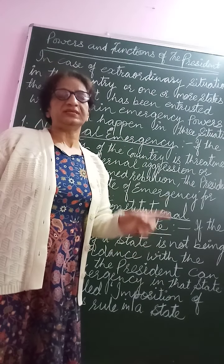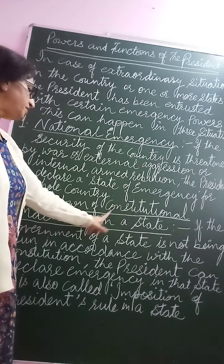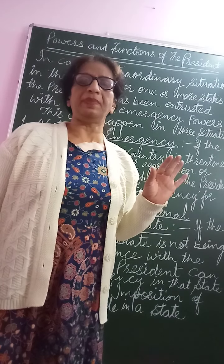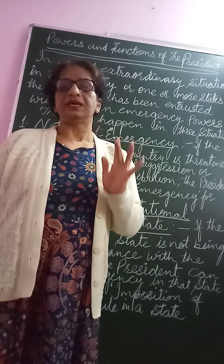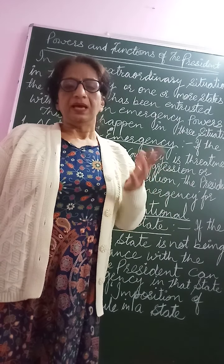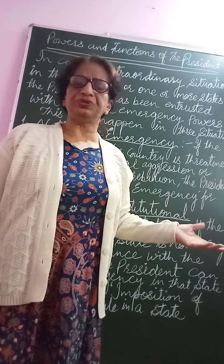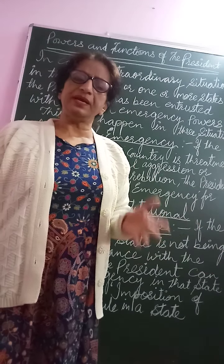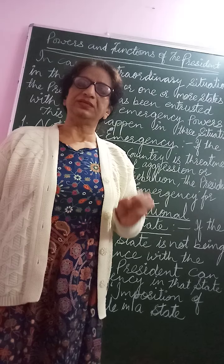Now we move to the second emergency power of the President — that is the breakdown of constitutional machinery in a state. If in a state, the government is not working according to the Constitution, constitutional machinery has broken down, then emergency is imposed in that state. For example, emergency imposed in Jammu & Kashmir. This type of emergency is called President's Rule — when the government is not working according to the Constitution and law and order is not functioning properly.